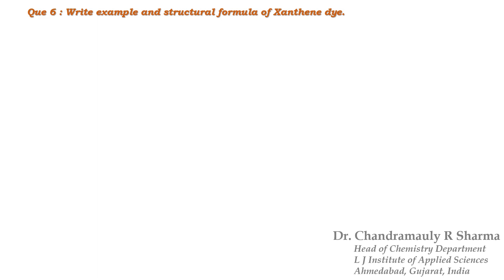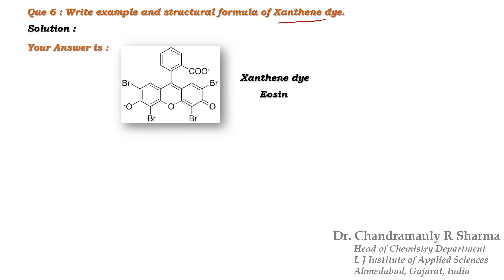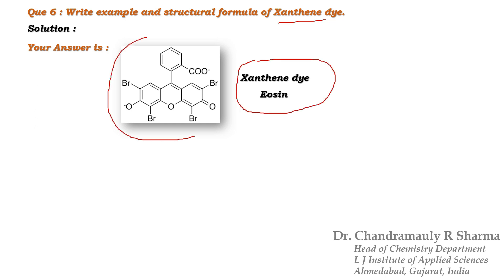Next question: Write an example and structural formula of a xanthene dye. The answer is eosin. Eosin is a xanthene dye and its structure is just given on your screen.